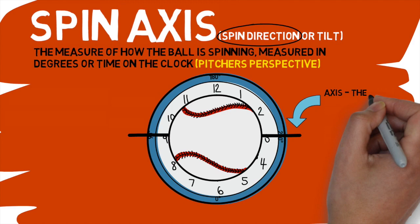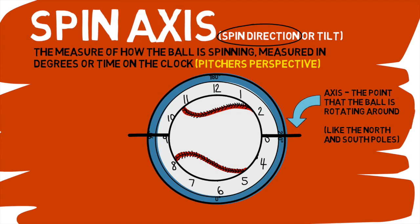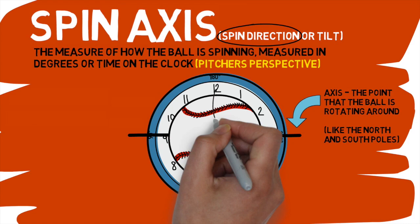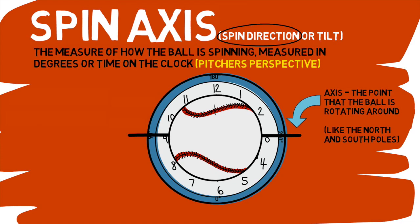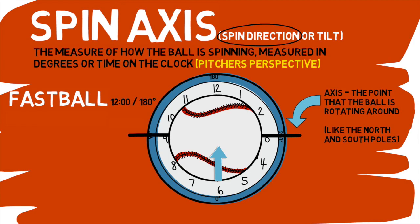Now let's talk about the baseball itself. When most people think of the axis of some sort of spinning sphere, it's easy to think of the points in which the ball is spinning around, like the north and south poles of the earth. This is NOT what is being measured by spin axis. What is actually being measured is the direction the ball is spinning from. So if you look at a four-seam fastball with pure backspin, which has the top of the ball moving back towards the pitcher and the bottom part spinning towards the batter, this metric would read as a pitch with a 12 o'clock spin axis and 180 degrees of tilt.